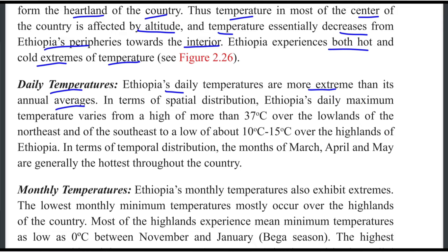In terms of spatial distribution, Ethiopia's daily maximum temperature varies from a high of more than 37 degrees centigrade over the lowlands of Ethiopia.